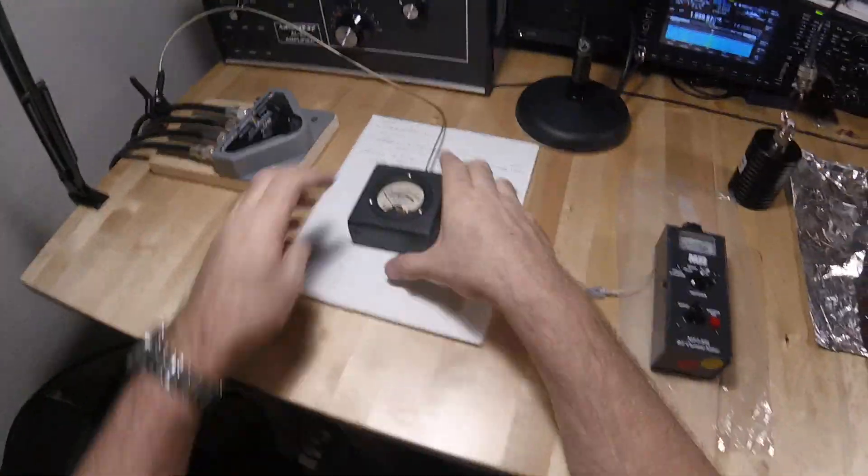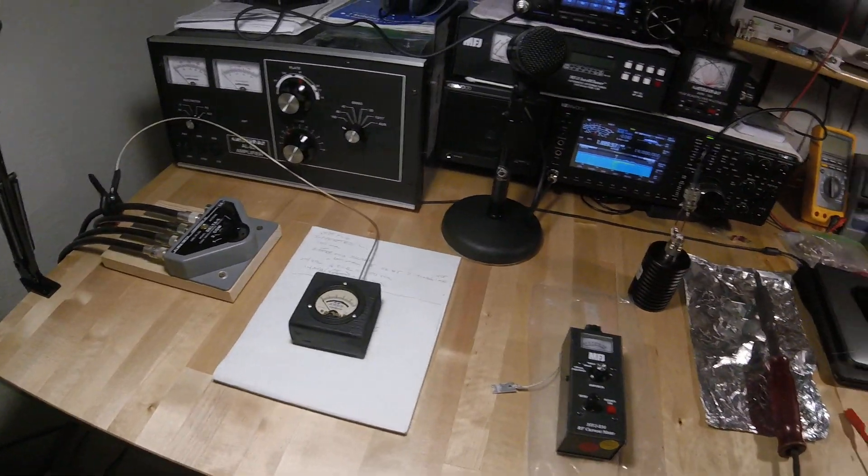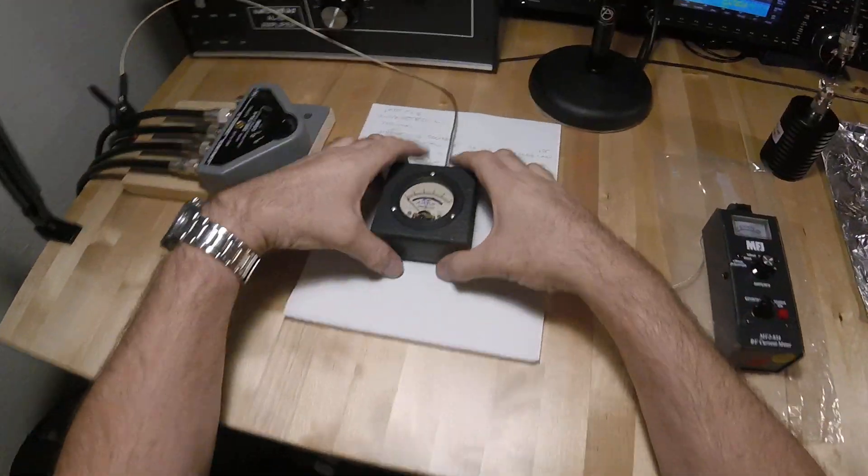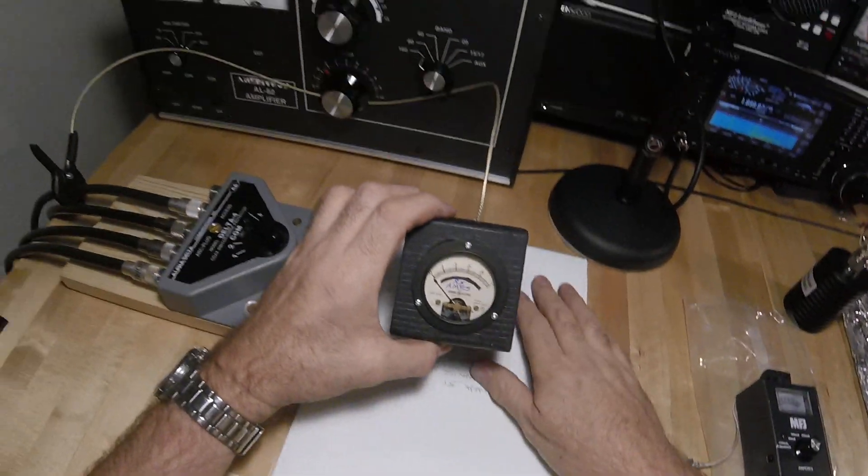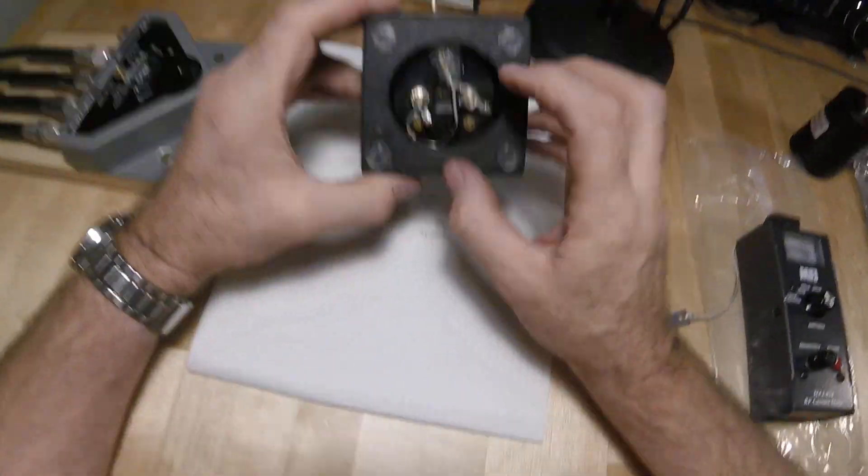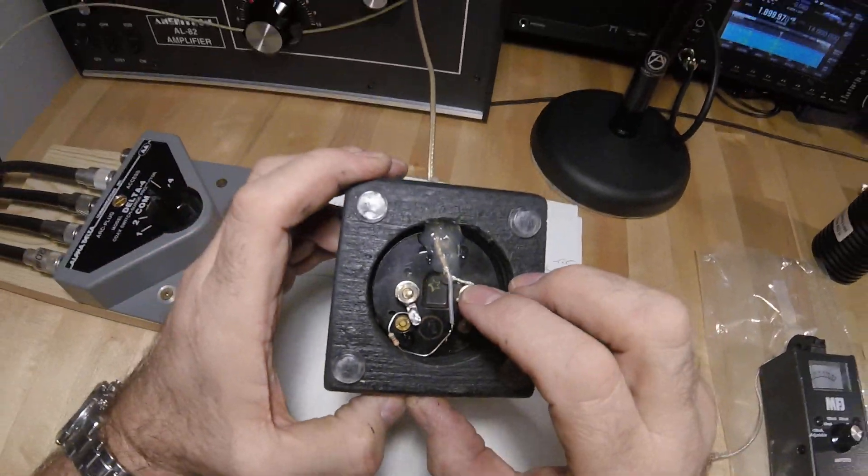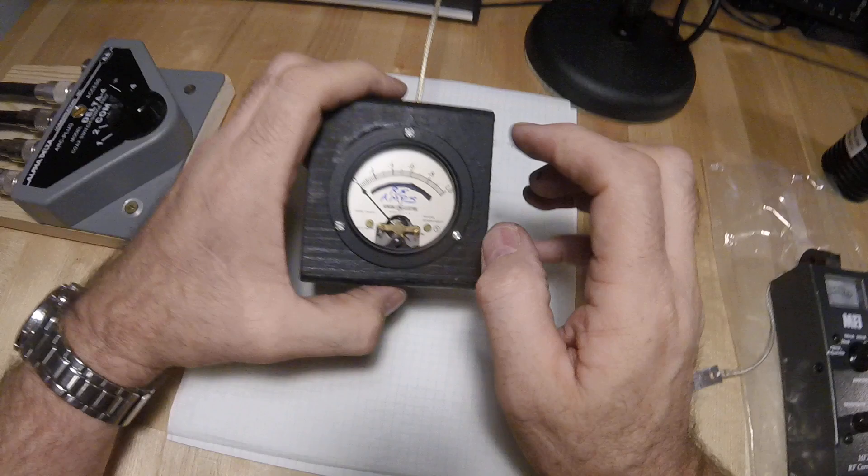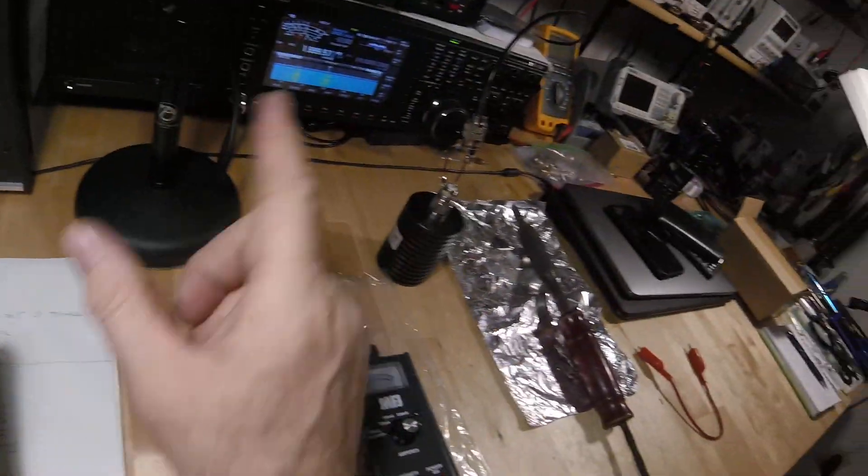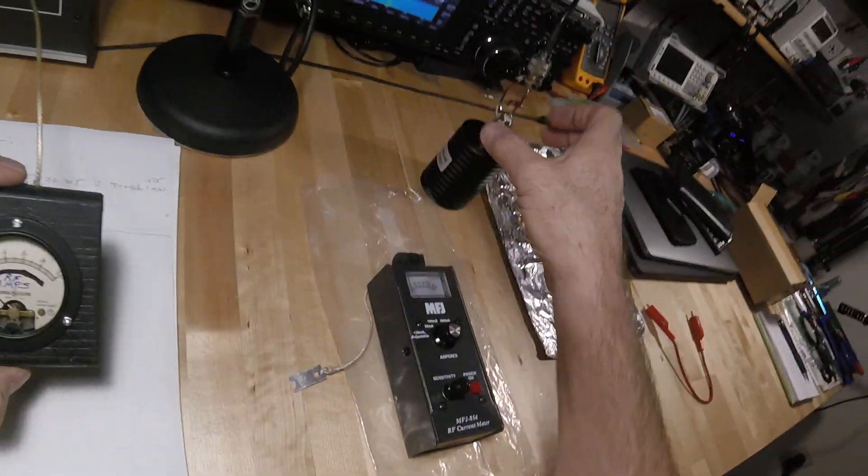Here we are in my ham shack and we're going to test my new RF watt meter. I have it calibrated here. You probably will see in the other video how I made this. I ended up going with about an 8K resistor and it works really well. It measures 1 amp at 50 watts into 50 ohm dummy load.